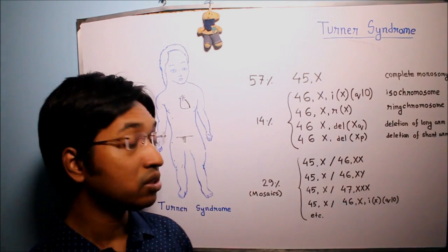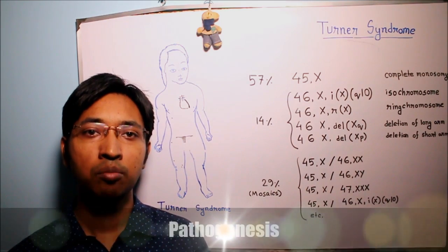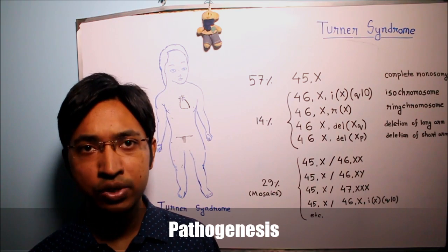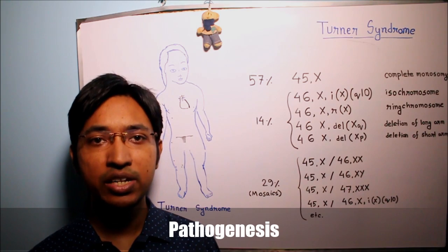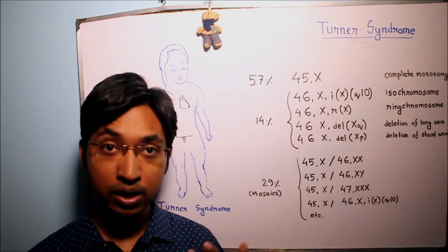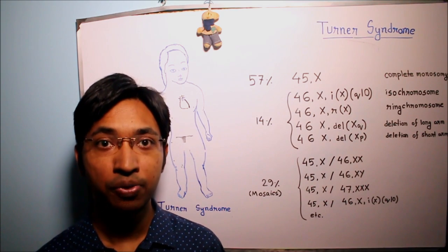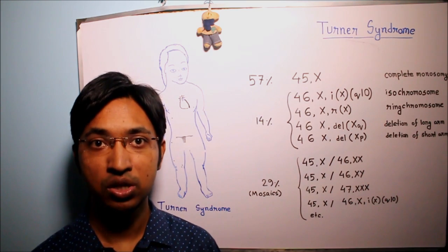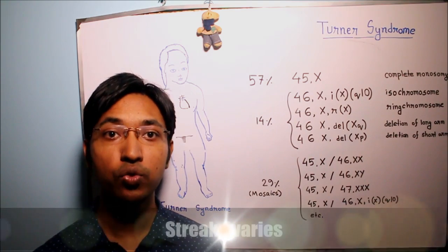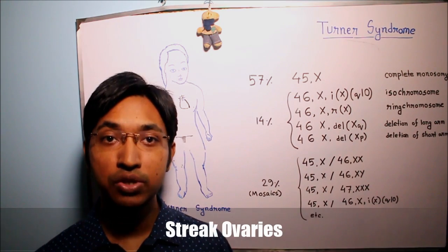Now we will talk about the pathogenesis of Turner syndrome. The molecular pathogenesis is not completely understood. What we do know is that in individuals with Turner syndrome, during early embryogenesis fetal ovaries develop normally. However, due to the absence of a second X chromosome, there is accelerated loss of oocytes that is completed by two years of age. As a result, ovaries are reduced to atrophic fibrous strands known as streak ovaries, containing no ova nor any follicles, leading to amenorrhea.